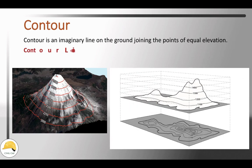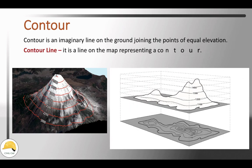There are several points on the earth's surface. In a topographic map, the features represent the earth. These lines are called contour lines.